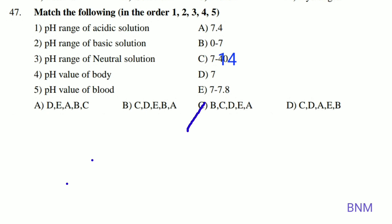Last one in this set: the pH value of blood. Blood has a pH value of 7.4, that is option C.